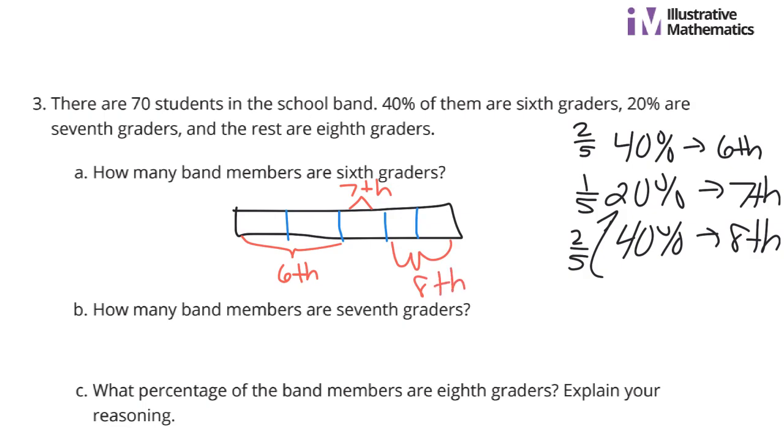Well, if there are 70 students in the band, if I divide that by five, 70 divided by five is going to be 14. So that means I have 14 students in each of these fifths. So here's 14 and 14 for the sixth grade, which means there are 28 sixth graders. I have 14 students in this pod for the seventh grade. And then lastly, I would have another 14 here and 14 here, meaning 28 eighth graders as well.